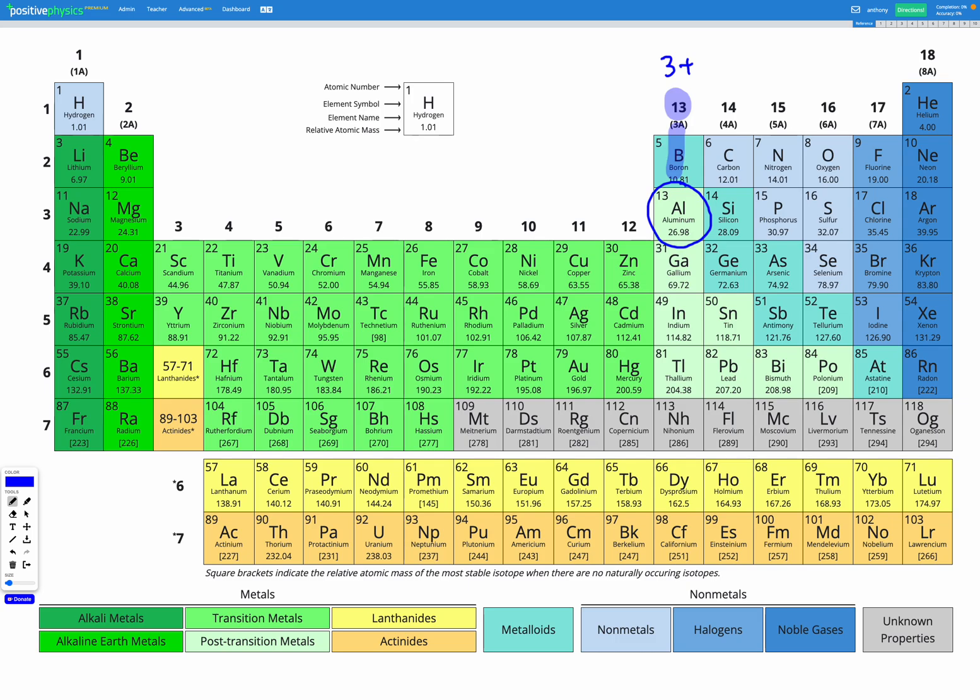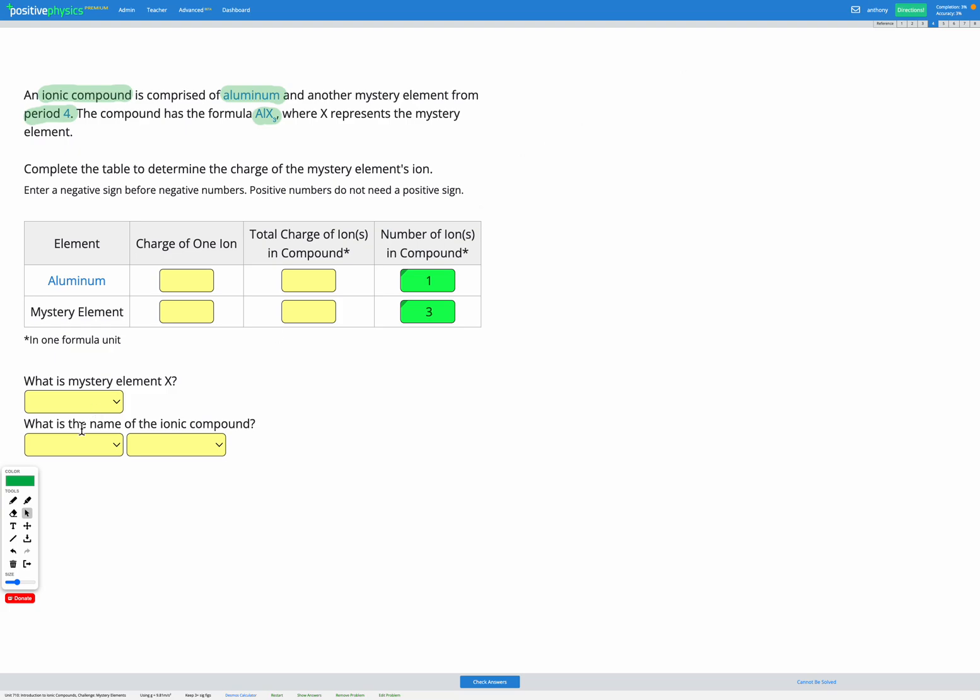And as for our mystery element X, we know the period, which is the row, but we don't know the group that it's in. So we don't know what ion it's going to form. So we can fill in. We know that aluminium is three plus for the charge of one ion.